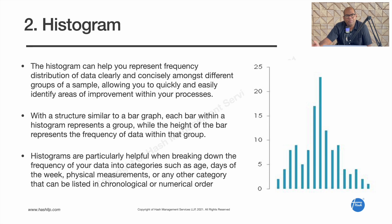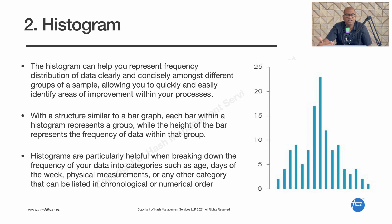For example, a bar chart can show four different regions — north, south, west, east — but a histogram represents continuous data with a particular interval, such as data from 5 to 10 in one bar, 10 to 15 in the next, 15 to 20, and so on. Histograms are useful for breaking the frequency of data into categories such as age, days of the week, physical measurements, and more. It helps in visualizing where the high frequency lies in the data.